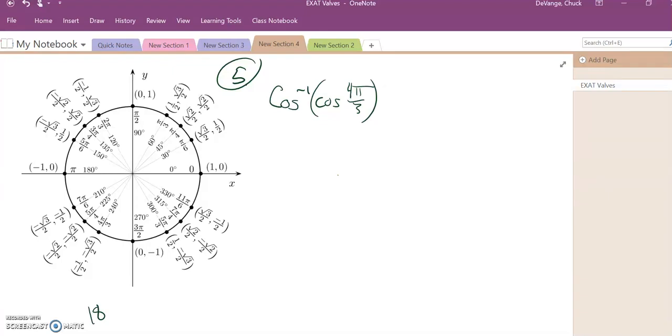This is Math 142, Practice Test 1, question number 5. We are supposed to find the exact value of the inverse cosine of the cosine of 4π over 3.